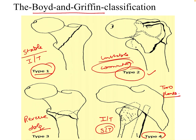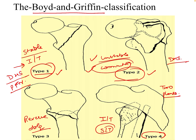In type 1, which are stable intertrochanteric fractures, they can be managed by either dynamic hip screw or proximal femoral nail. In type 2, which are unstable with posterior-medial combination, they can also be managed by either dynamic hip screw or proximal femoral nail.